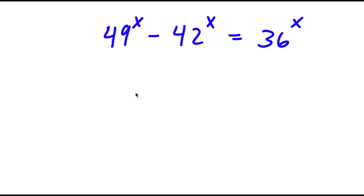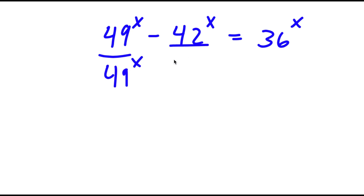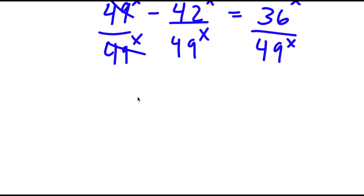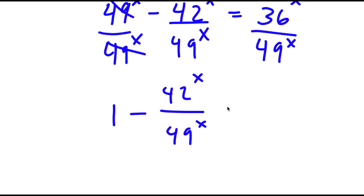In this problem, I have 49 to the power of x minus 42 to the power of x is equal to 36 to the power of x. I'm going to first start by dividing every term by 49 to the power of x. So these two cancel out, and now I get 1 minus 42 to the power of x over 49 to the power of x is equal to 36 to the power of x over 49 to the power of x.